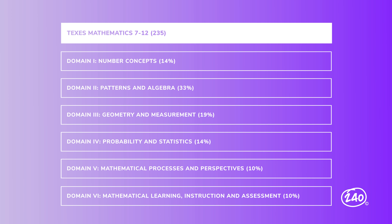And spoiler alert, at the end of our tour, we'll encounter some practice questions, so make sure to pay close attention. Let's start by digging into domain one, number concepts. This domain is about understanding and using numbers, number systems and their structure, operations and algorithms, quantitative reasoning, and technology appropriate to teach the statewide curriculum. This domain covers three competencies.